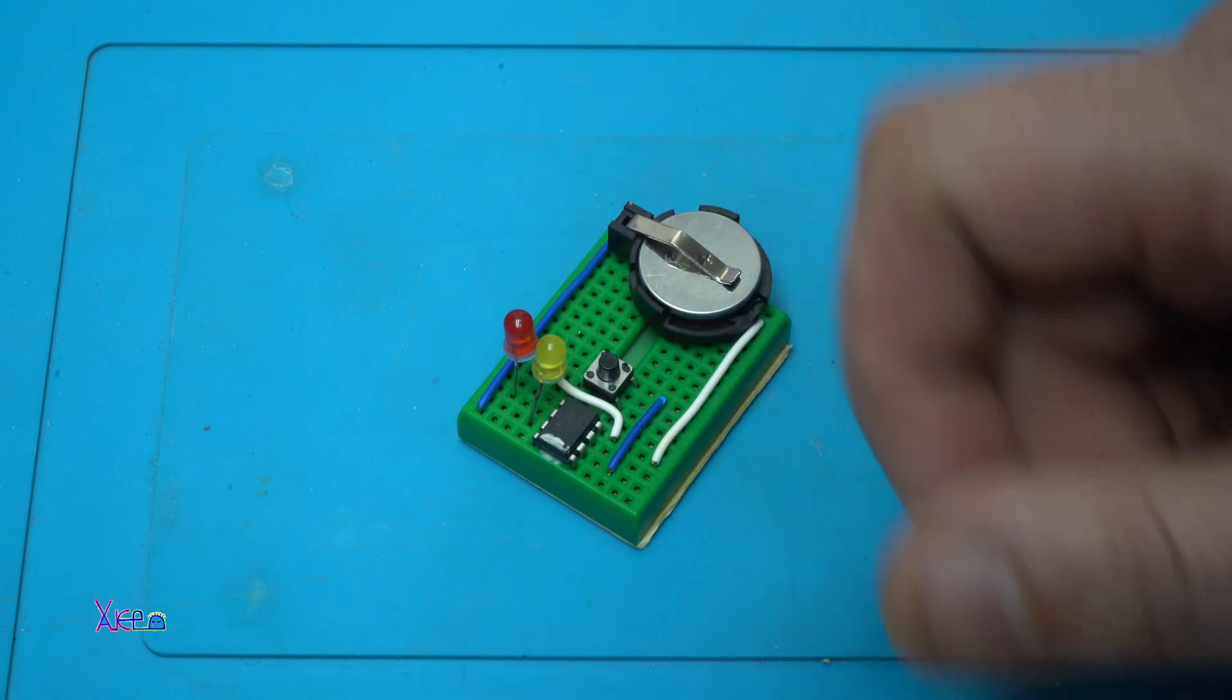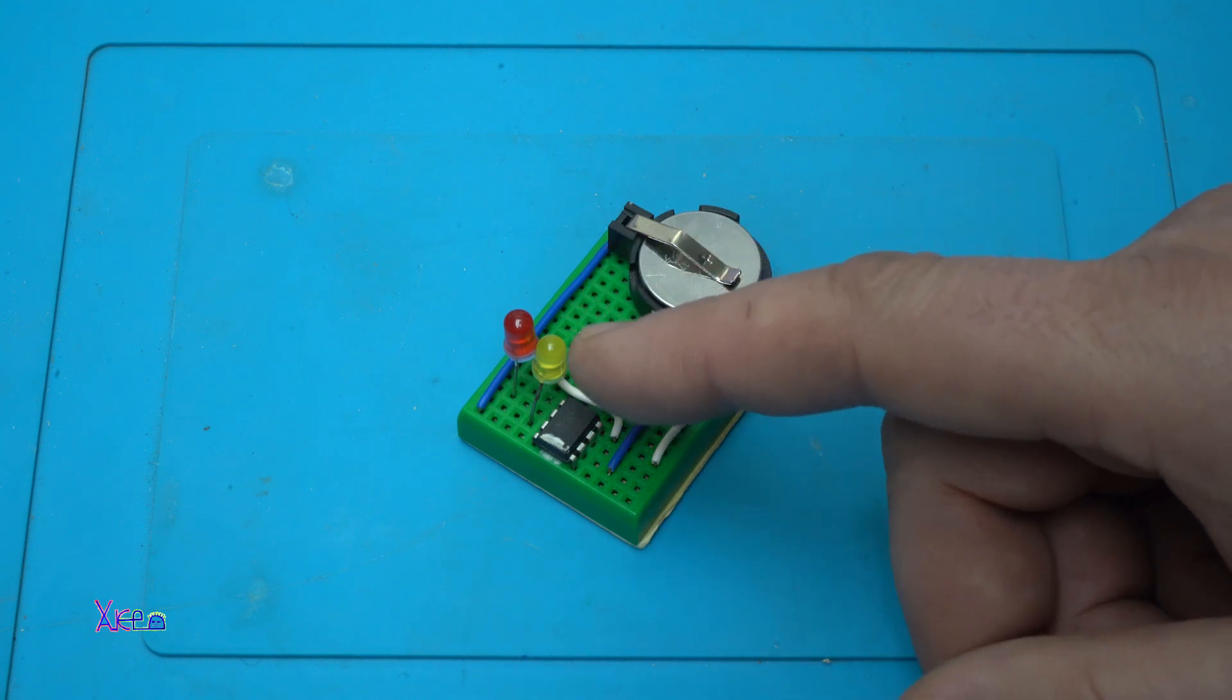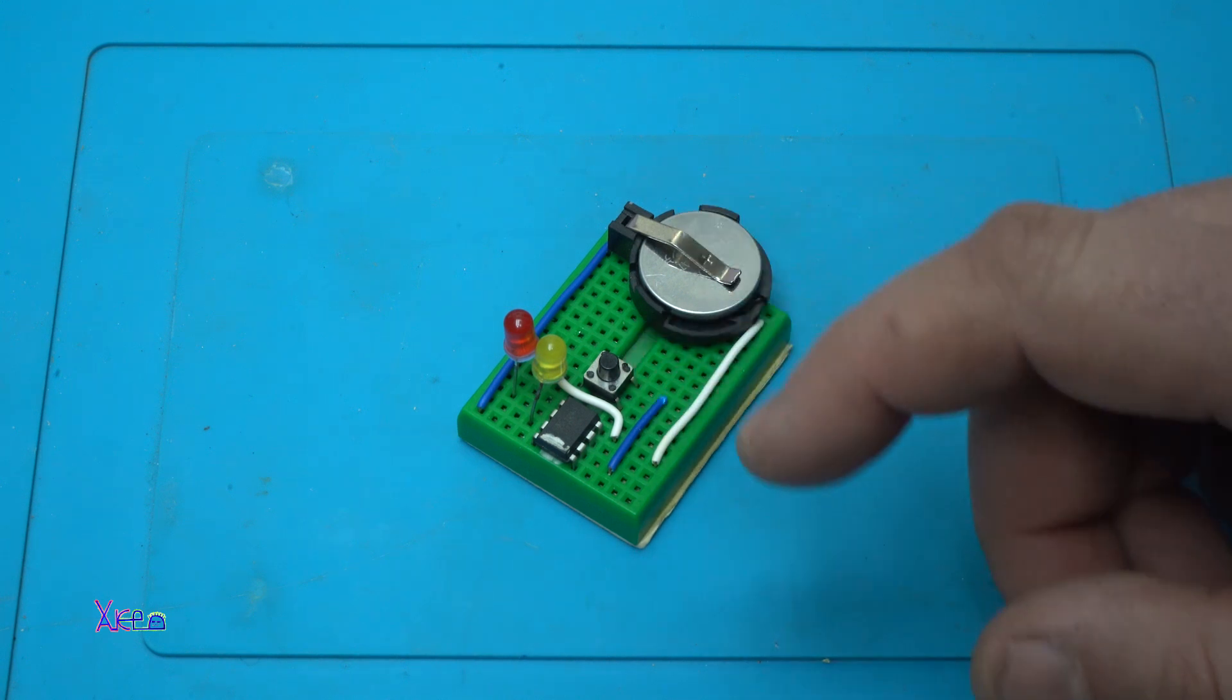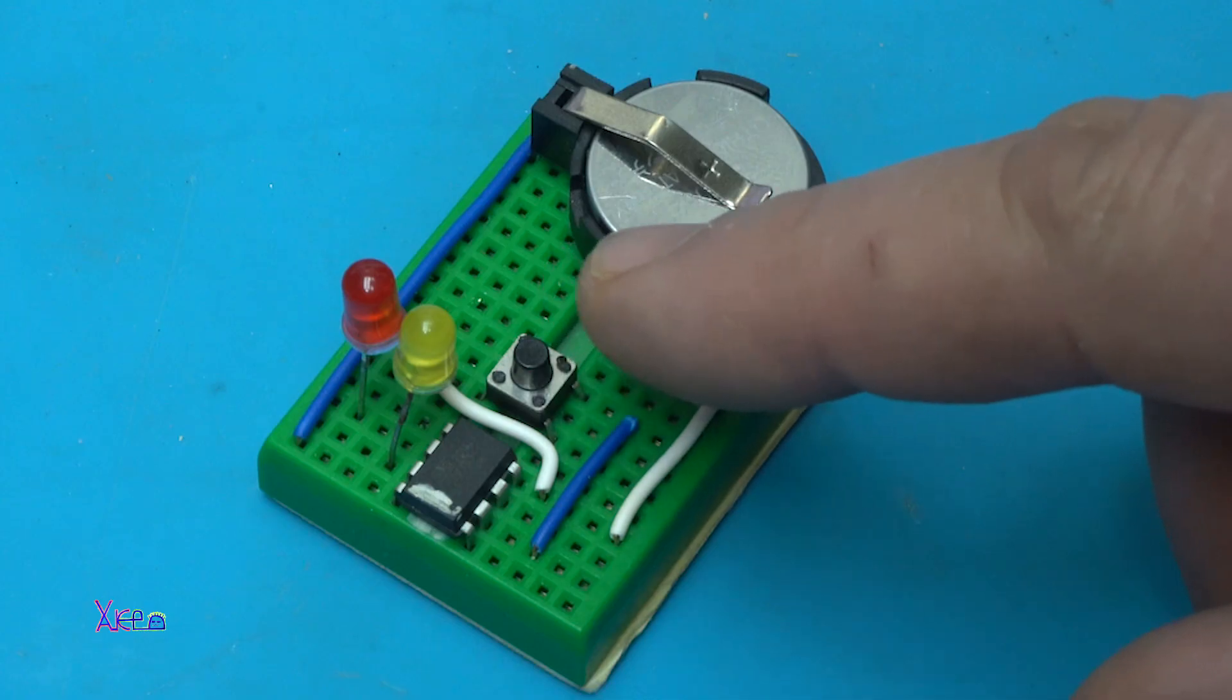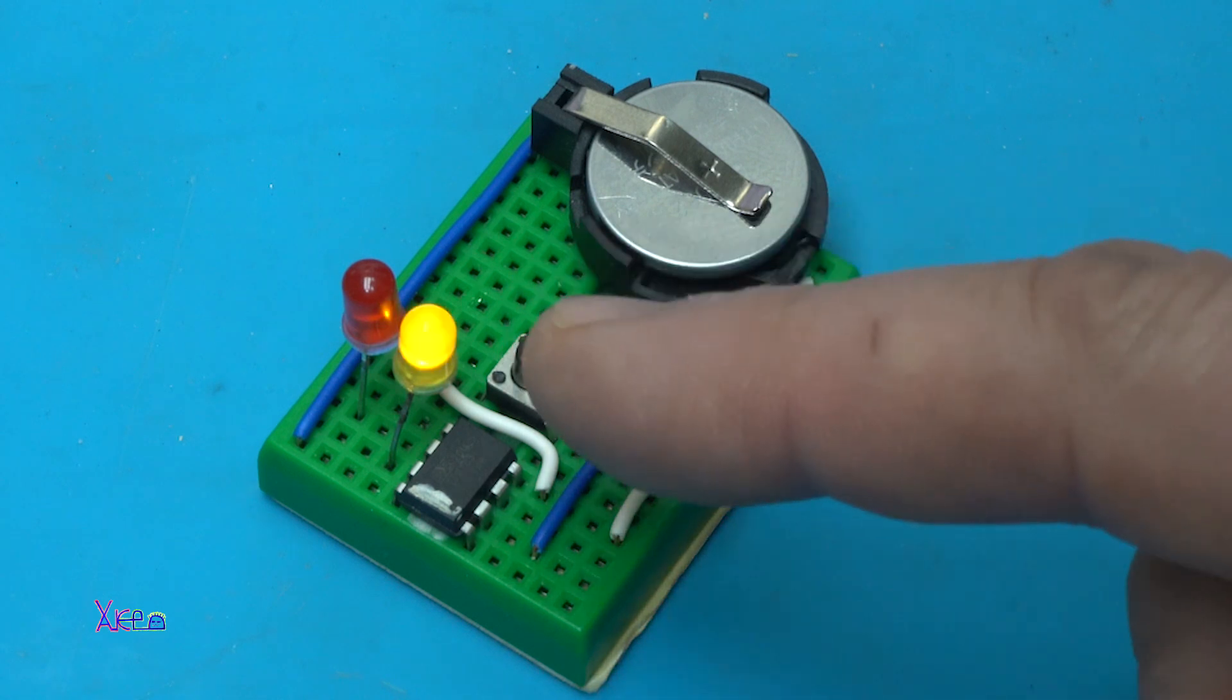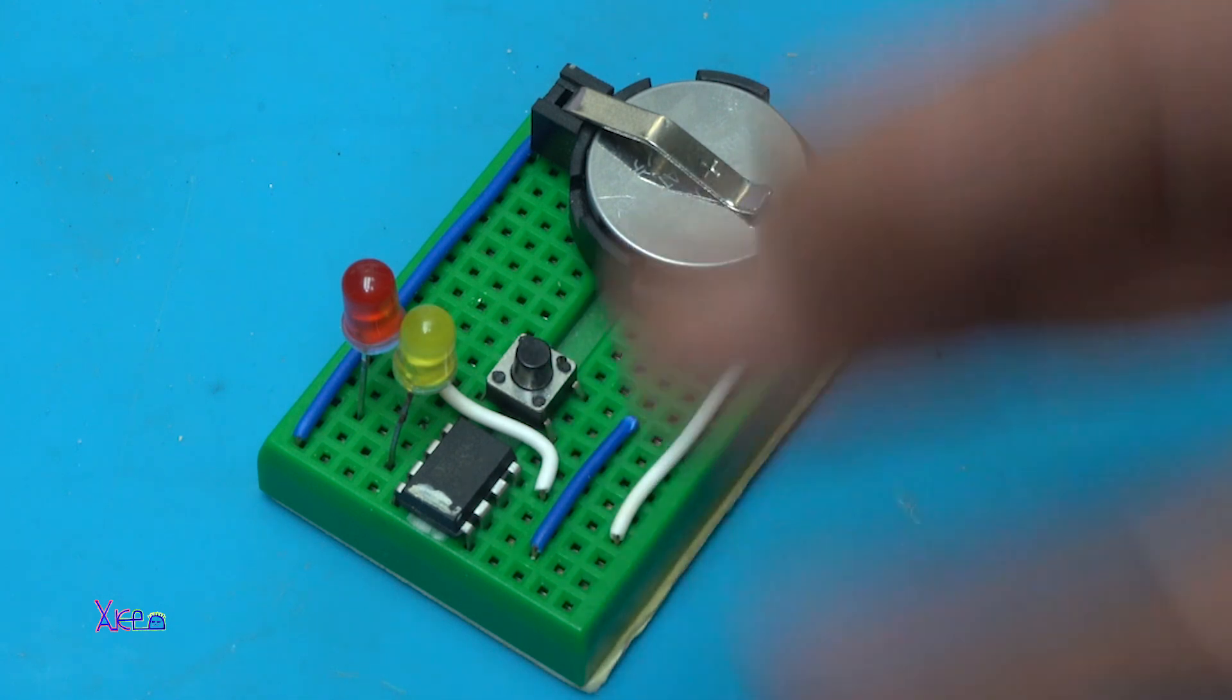On the red LED we are going to see the first rolling dice, and on the yellow LED we are going to see the second dice. We need to count how many flashes when I press the push switch. One, two, three, four, five, six. Six and one, three, four, five, six. I rolled two sixes.